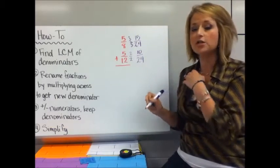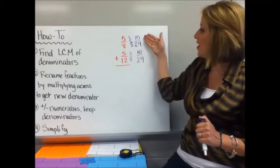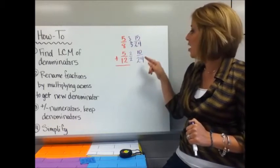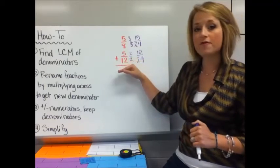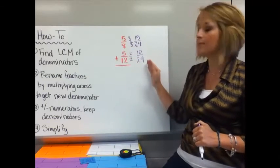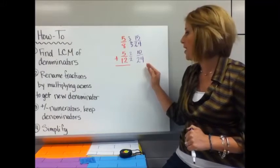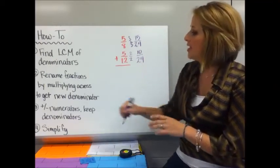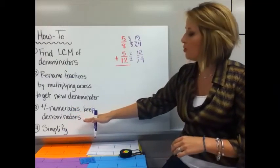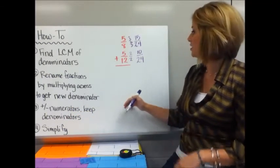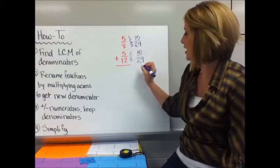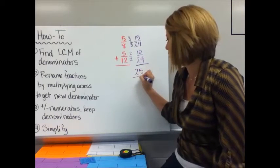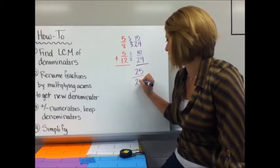I have renamed these fractions. I have not changed their value. If I were to simplify 15/24, it would go back down to 5/8. Or if I were to get the decimal of 5/12, that would be the same decimal as 10/24. I haven't just changed the numerator or the denominator. I have changed both parts. Now I'm going to add or subtract the numerators and I'm going to keep the denominators. So I'm adding 15 and 10, which is 25, and then I'm going to keep that denominator.